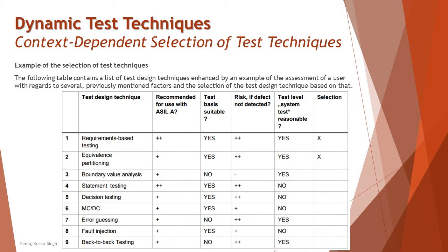The next column talks about the recommended use of these techniques based on ASIL level A, which is the highest consideration. ASIL stands for automotive safety integrity level. So different methods are recommended based on the safety integrity level. The following column is about test basis availability — whether the test basis required to derive test cases for that technique is available — along with the recommendation for that. Another column addresses the risk if a defect is not detected by that technique.